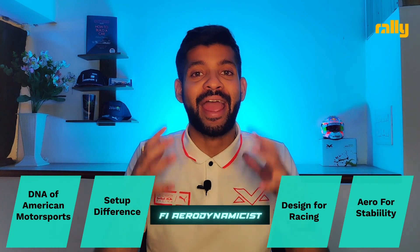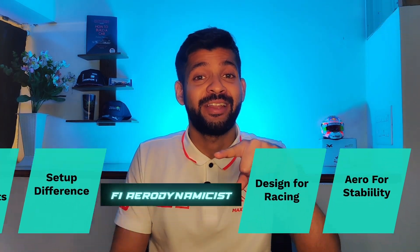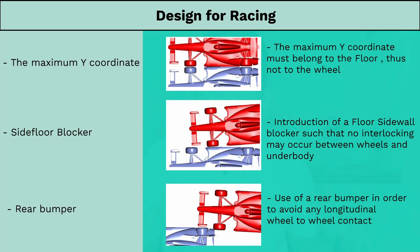What are some intelligent design features on the IndyCar that encourage racing and make driving safer? Because of close wheel-to-wheel racing at high speeds, there is a high probability of a big crash. IndyCars have inherent design features to address this. The maximum Y-coordinate must belong to the floor and not to the wheel, which prevents wheels from touching directly — a scenario that would normally result in a scary accident. Side by side, your floors will initially touch rather than the wheels. A side flow blocker — a sidewall on the floor — also prevents interlocking between the wheels and the underbody of another car.